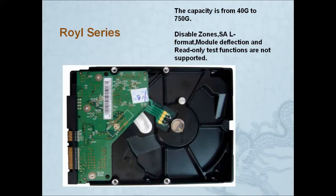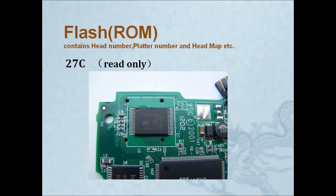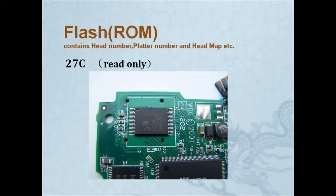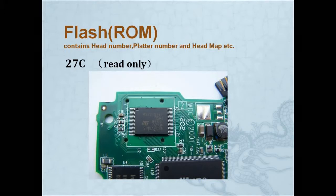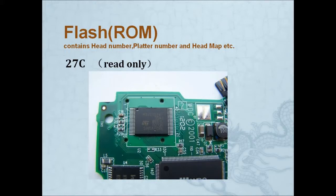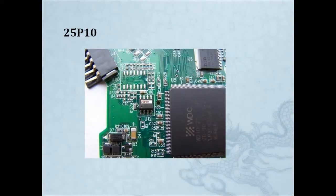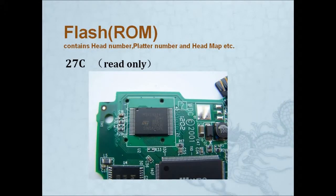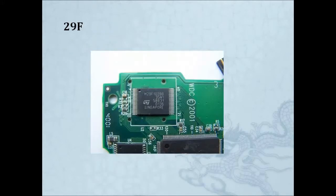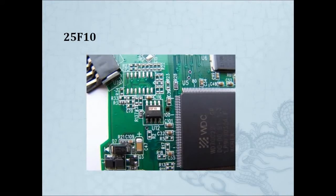These functions are not supported by our tool. Now let's talk about the ROM on the WD drive. The ROM, which is the flash ROM, contains the head number, the platter number, and the head map. For old WD drives, the ROM is 27C, which is a read-only ROM. You cannot do operations like Depop Head with a 27C ROM chip — you'd have to change it to another chip like 29F or others. For WD drives, only 27C is read-only; the rest of the ROMs are fine for any operation. Those include 29F, 25P10, and 25F10.